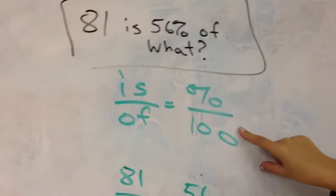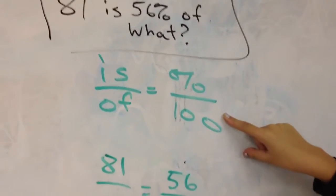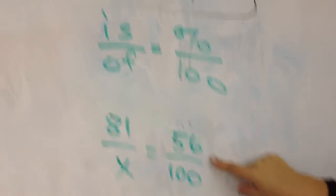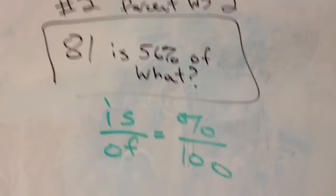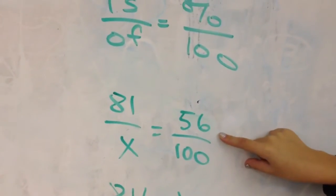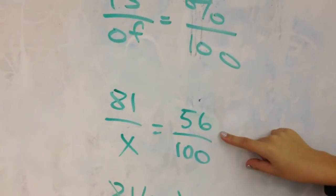The way you set it up is, is over of equals percentage over 100. We have 81 next to the is, and 56 had a percentage sign. The 100 on the bottom right you always put in, and then we can solve for x.